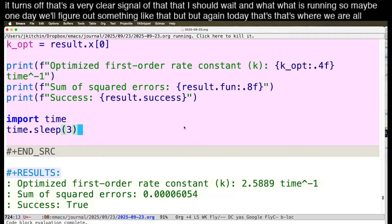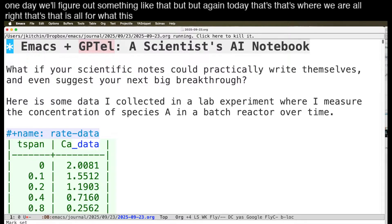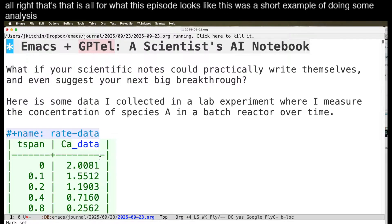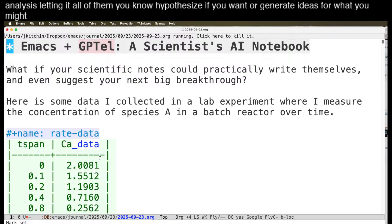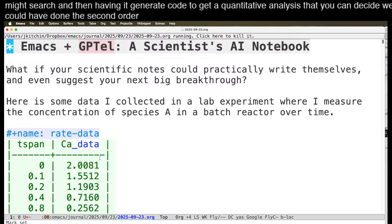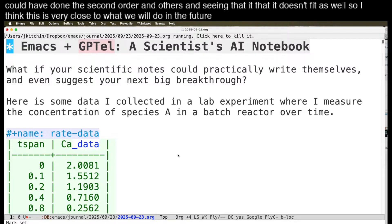But again today that's where we are. Alright that's that is all for what this episode looks like. This was a short example of doing some analysis letting an LLM hypothesize if you want or generate ideas for what you might search and then having it generate code to get a quantitative analysis that you can decide. We could have done the second order and others and seen that it doesn't fit as well. So I think this is very close to what we will do in the future and I look forward to seeing how it evolves.